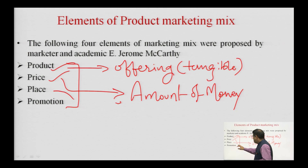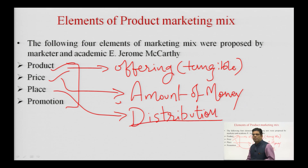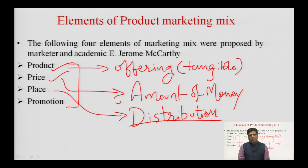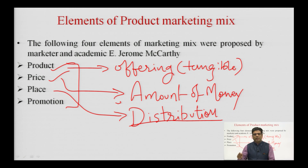The third element of marketing mix in case of a product is place. Place means how the product will reach the consumer or how the product will be distributed. Place is more related to distribution. Certain products are available in nearby shops, while others are available in a mall or showroom 10 kilometers away. For example, when purchasing milk or bread in the morning, we just visit the nearby shop and come back within 10 minutes.